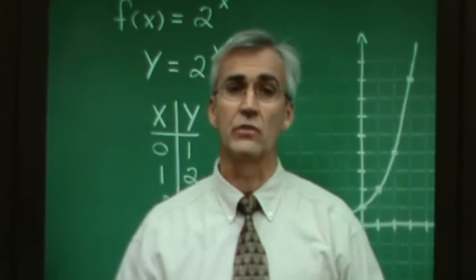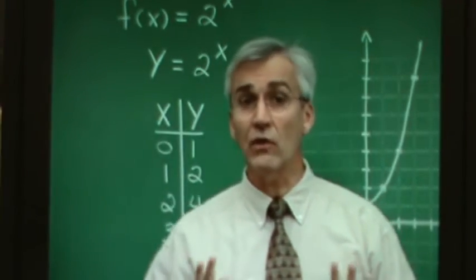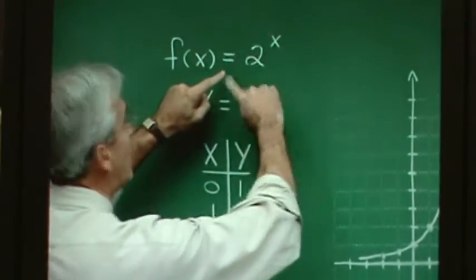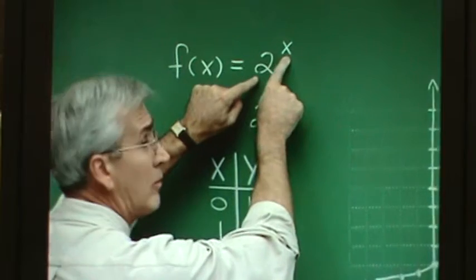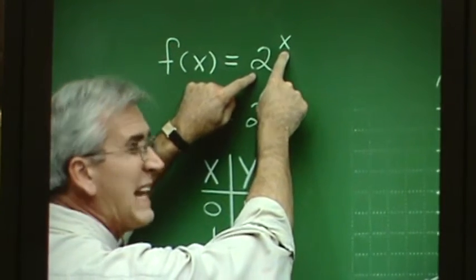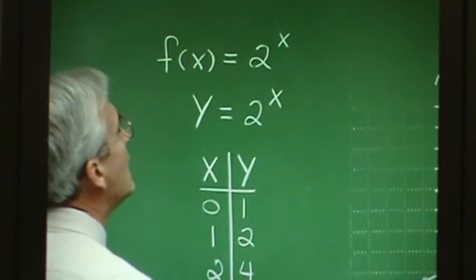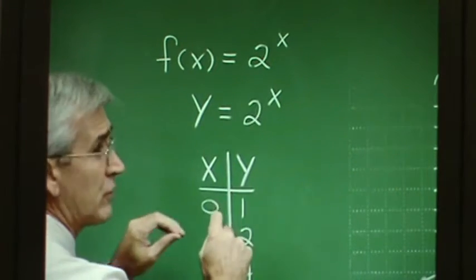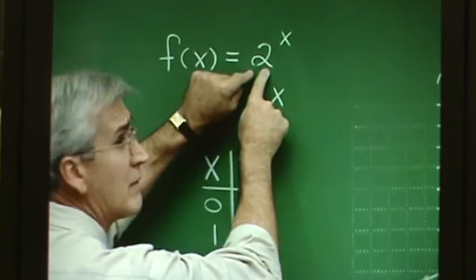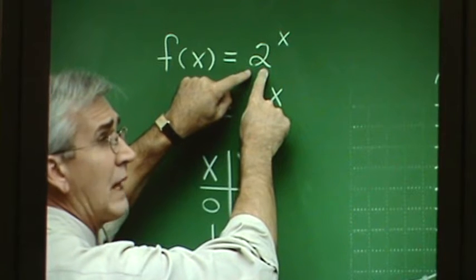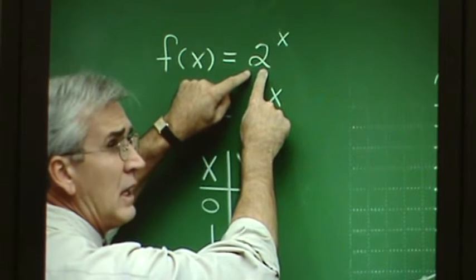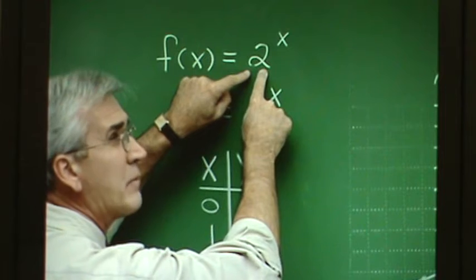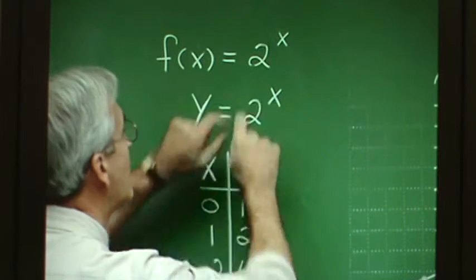Exponential functions have the characteristic that a variable lies in their exponent. That is, we have a base-exponent situation where the variable is in the exponent. There is a further restriction: the base of an exponential function must be a positive number, and it also cannot equal 1. We'll see why that's the case in just a little bit.